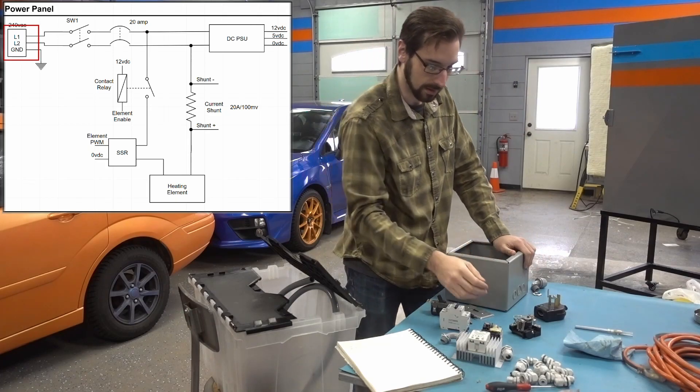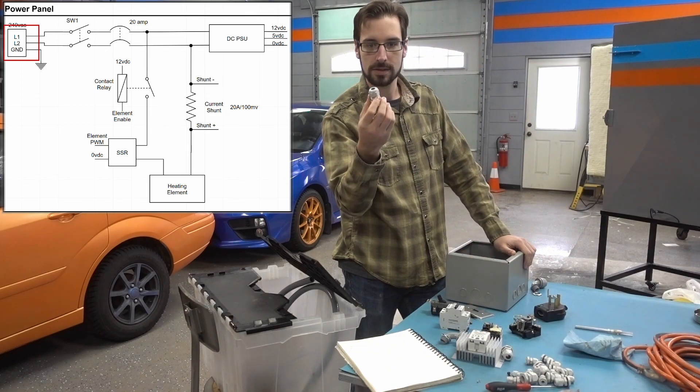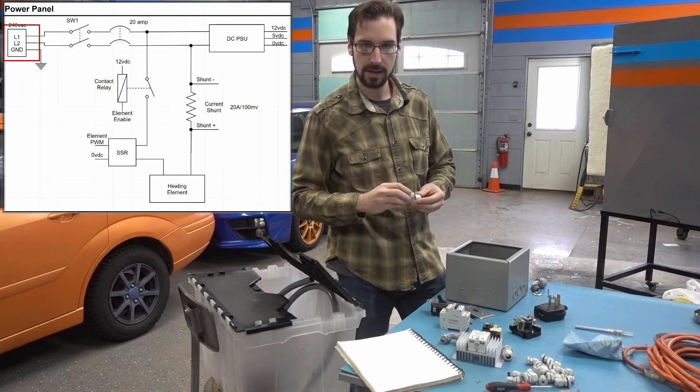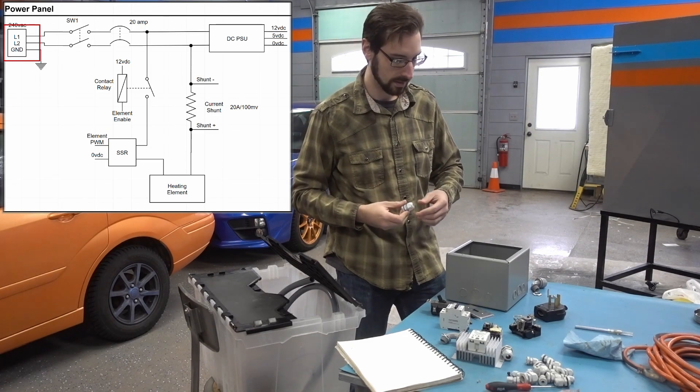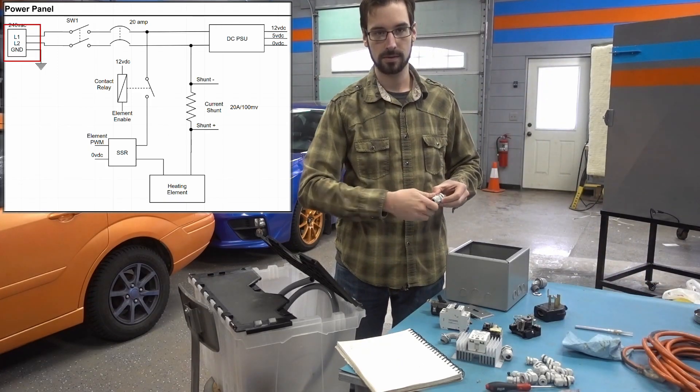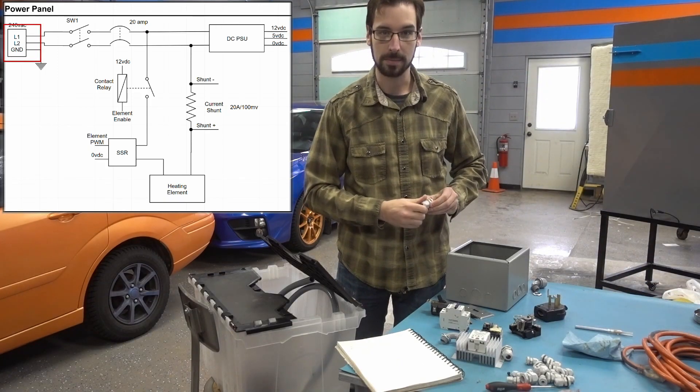So once that comes into the panel, we'll use these. These are called wire glands or I call them wire glands anyway. They're nice, kind of like a collet if you know what that is, where the wire will come in and then you clamp down on the wire. It holds it in place nicely.